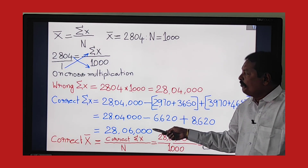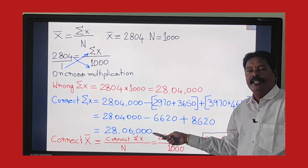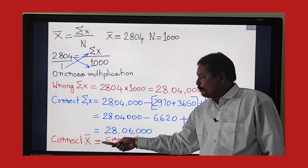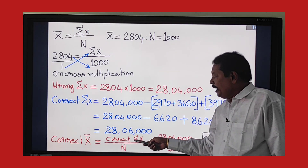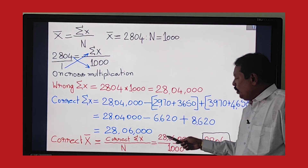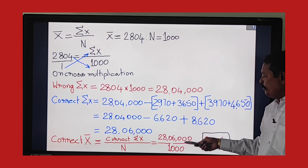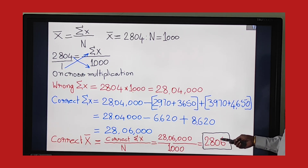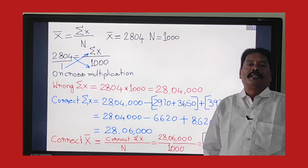With the help of the correct Σx, we can calculate the correct mean. Correct x̄ = Correct Σx / n = 28,06,000 / 1,000 = 2,806 rupees. Therefore, 2,806 rupees is the correct mean salary of the thousand laborers.